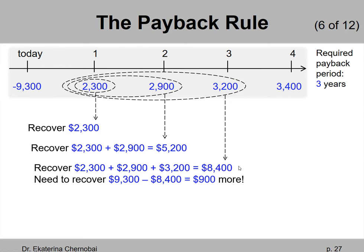At this point, you may realize that now I need to calculate a fraction of the fourth year because it's not going to be a full fourth year. Here's where you find how much you're still missing. We need to recover a total of $9,300. By the end of the third year, you will be at $8,400. So $9,300 minus $8,400 equals $900. We need to recover $900.